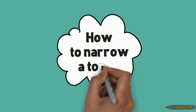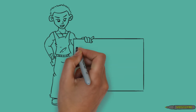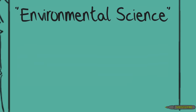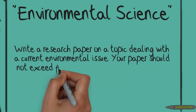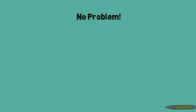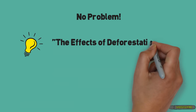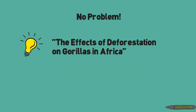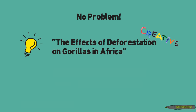Sometimes it can be really difficult to find a topic that is not too broad. Here are a couple of words of advice on what to do when your topic seems too broad. Let's say you are in an environmental science class. Your teacher gives you this assignment prompt: write a research paper on a topic dealing with a current environmental issue. Your paper should not exceed five pages and should be based on a topic that strongly interests you. You say, that's no problem — I know exactly what to write about. I saw a show the other day on TV and it talked about the effects of deforestation on gorillas in Africa. I think that's a great topic — it interests me and it's creative. So let's write about it.